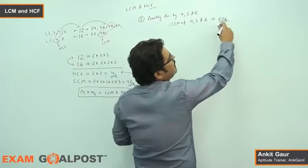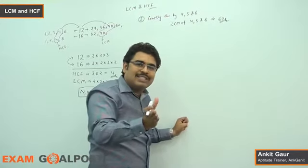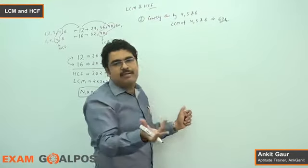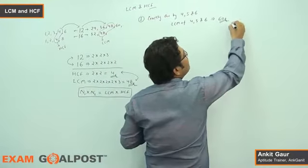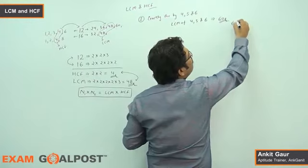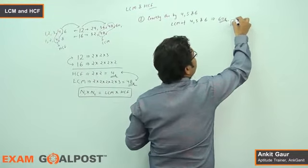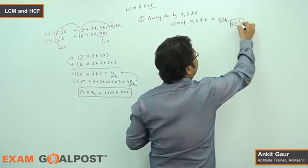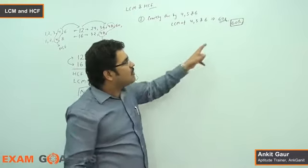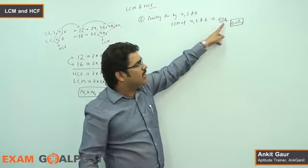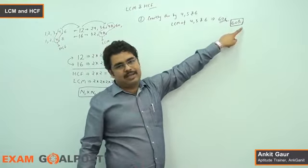By the way, multiples of 60 — 60×1, 60×2, 60×3 — form a series. Which series will be exactly divisible by 4, 5, and 6? The series in the format of 60 — any multiple of 60 — will be exactly divisible by 4, 5, and 6. The smallest possible number exactly divisible by 4, 5, and 6 is 60.